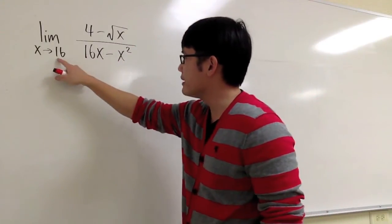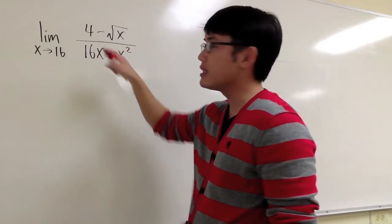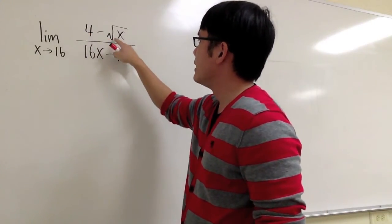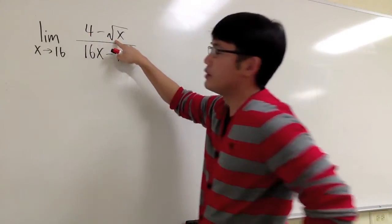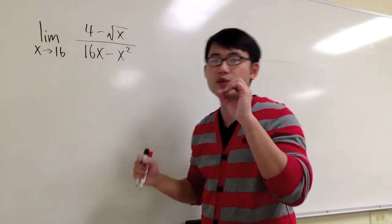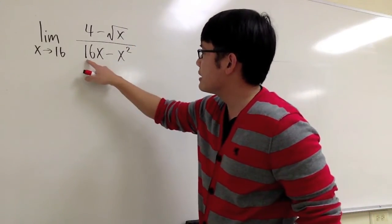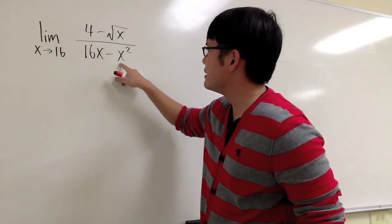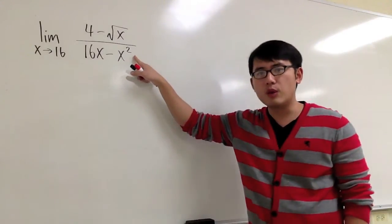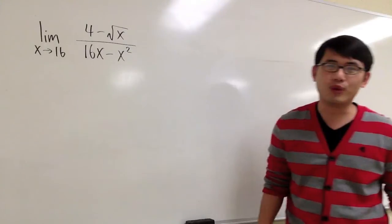As usual, let's plug in 16 to see what we get. 4 minus square root of 16, which is 4 minus 4, we have a 0 on top. On the denominator, 16 times 16 minus 16 squared, we also end up with 0 on the bottom. We have to do more work.